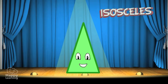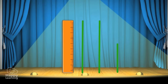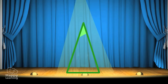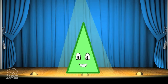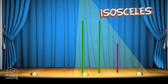In an isosceles triangle two sides are the same length and one is different. See how it's formed? Great. So this is an isosceles triangle with two equal sides and one different one.